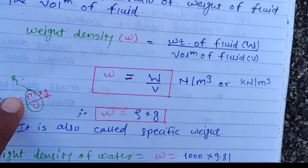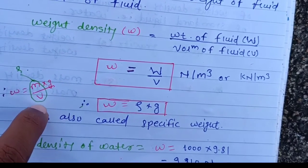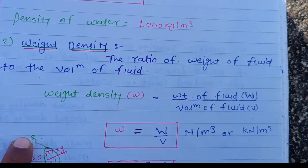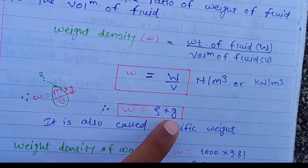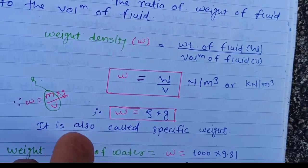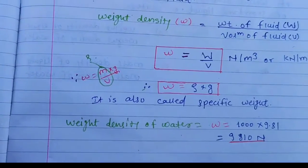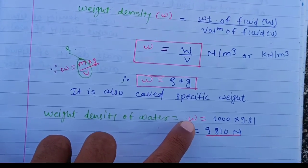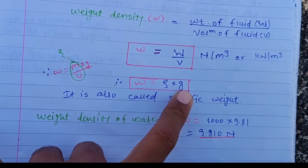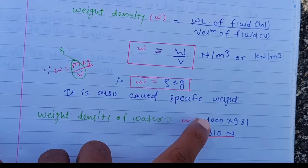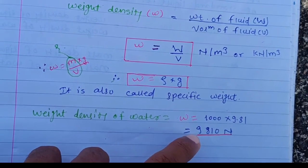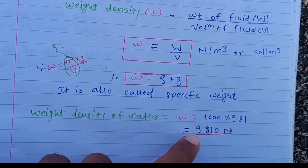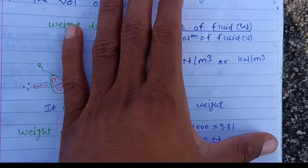Since weight W equals m times g, we get w equals m times g divided by V. Since m divided by V is density rho, therefore small w equals rho times g. This is called specific weight. The weight density of water is 1000 times 9.81, which equals 9810 Newton per meter cube.